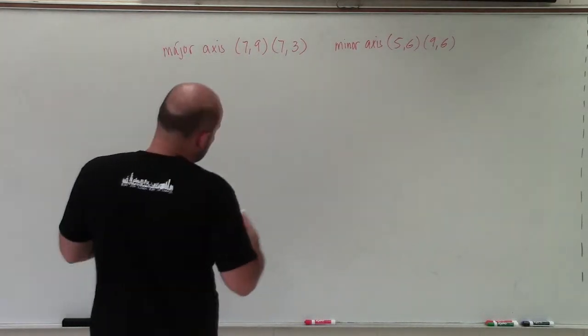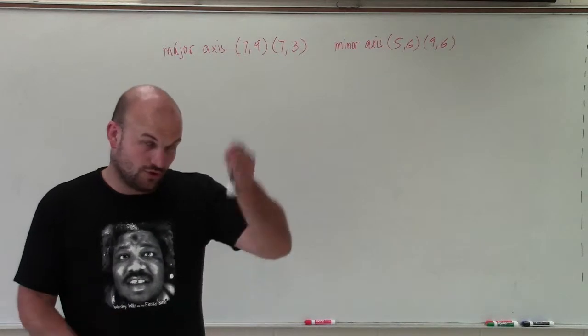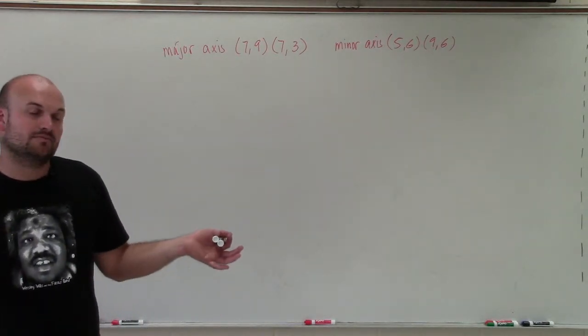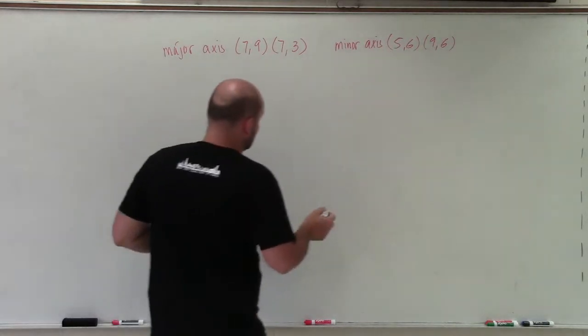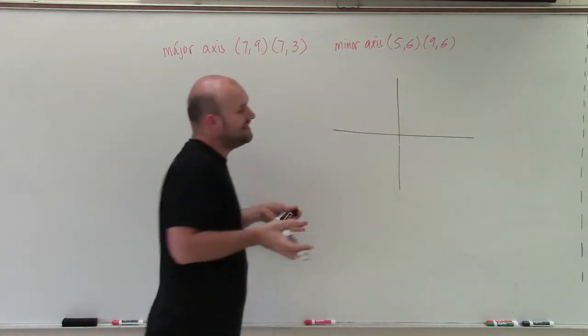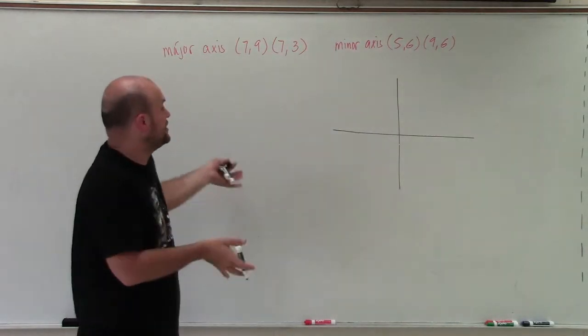So to write the equation of an ellipse, we need to be able to determine, is the major axis horizontal or vertical? Because that's going to depend on where our a or b are going to lie in our equation. So let's go ahead and at least graph the information that we've been provided. That's what I'd like to say is the first step. Just plot the information that you have.